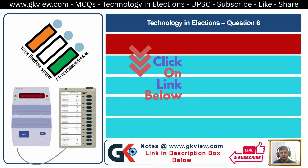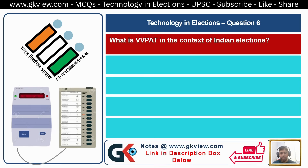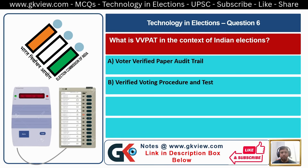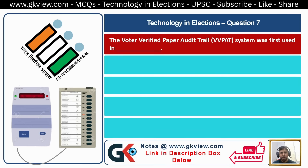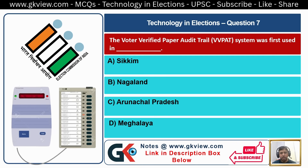Technology in Elections, Question Number 6/7. What is VVPAT? A VVPAT system was first used in: A. Sikkim, B. Nagaland, C. Arunachal Pradesh, D. Meghalaya. The answer is B: Nagaland.